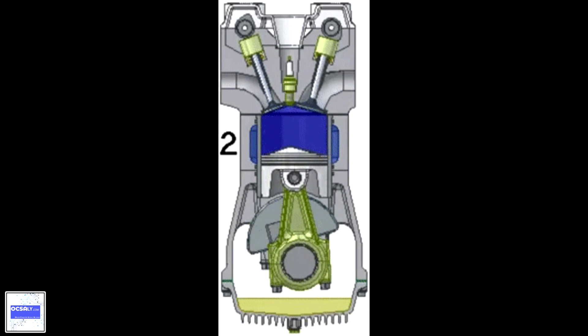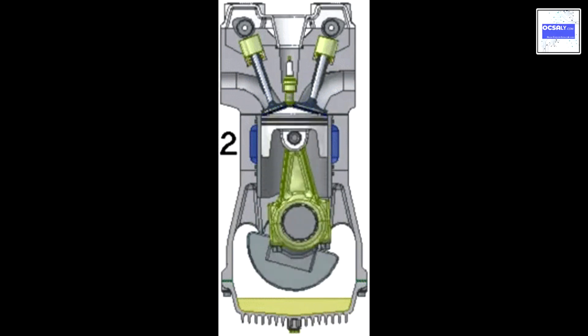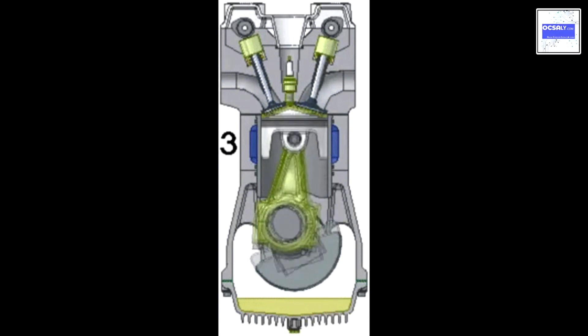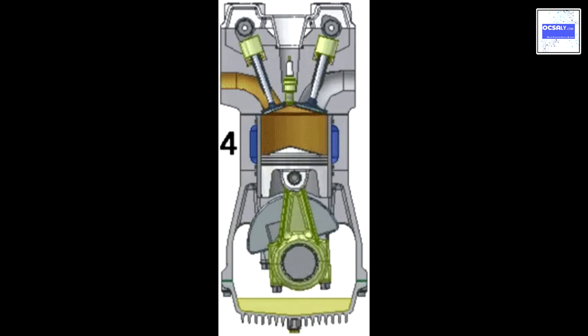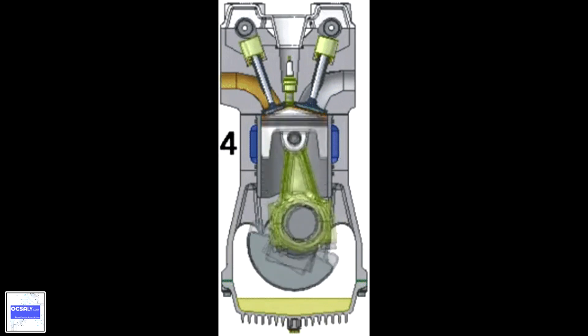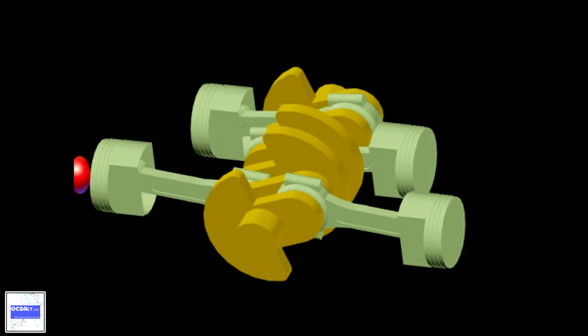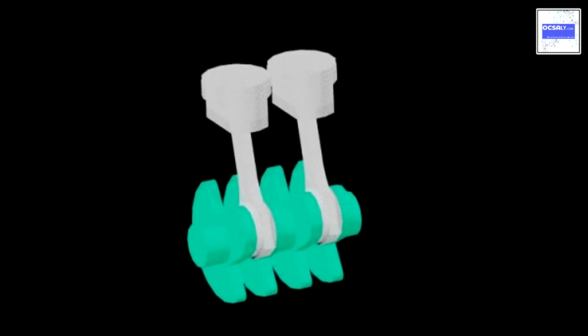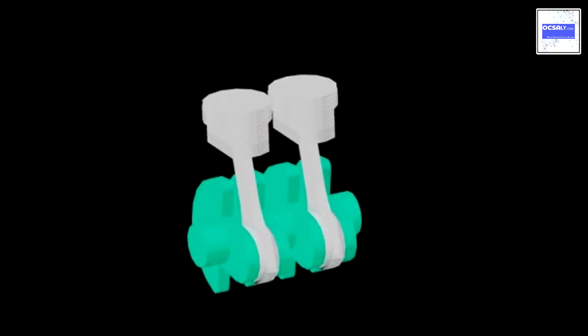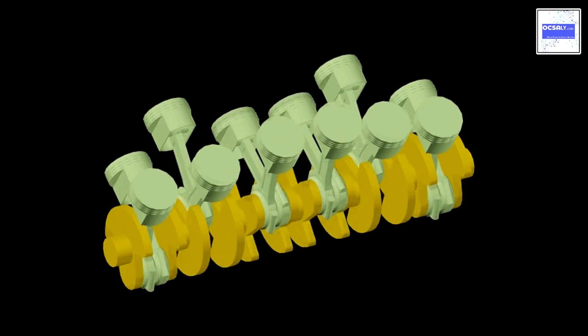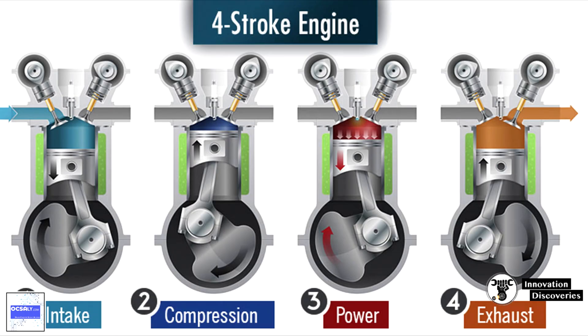Fourth, and the last is exhaust, also known as outlet. During the exhaust stroke, the piston once again returns from bottom dead center to top dead center while the exhaust valve is open. This action expels the spent air-fuel mixture through the exhaust valve.